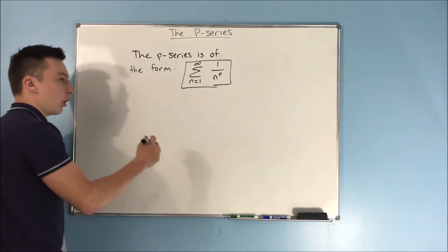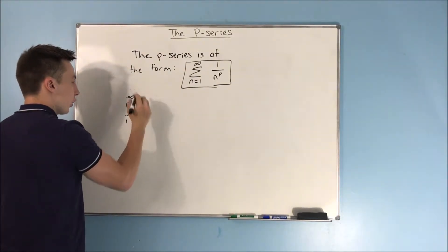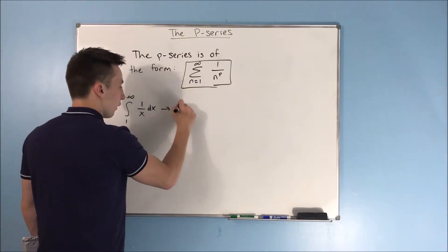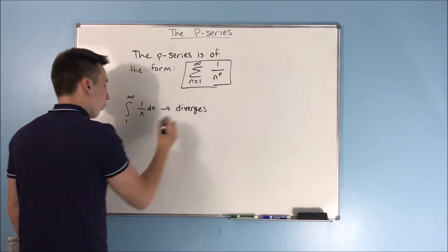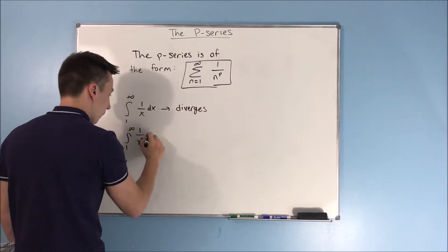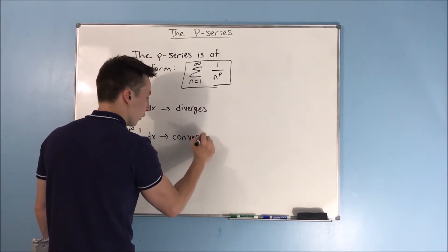Now, this kind of makes sense because recall from when we did our improper integrals, the integral from 1 to infinity of 1 over x dx diverges, whereas the integral from 1 to infinity of 1 over x squared dx converges.